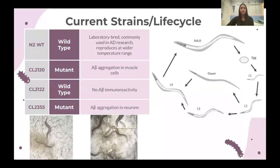Our two wild type strains are N2WT and CL2122, which has no amyloid beta immunoreactivity. Our two mutant strains are CL2120, which has amyloid beta aggregation in the muscle cells, whereas CL2355 has aggregation in the neurons. C. elegans are classified based on their larval stages to prepare for assays, and the L3 and L4 stages are normally what we are looking for.